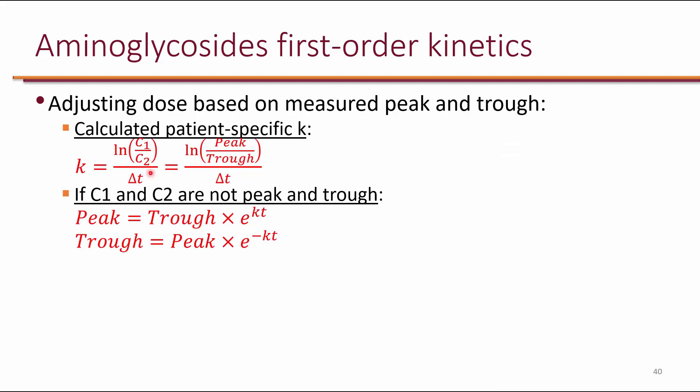Of course, if C1 and C2 are not true peak and trough, you can actually extrapolate. So you can say the equation is peak equals trough times e to the kT, or another way of saying it is trough equals peak times e to the negative kT. Again, these are all the same equation, it's just a matter of rearranging them to get what you're looking for.